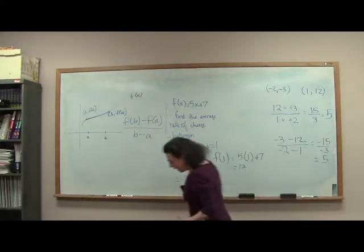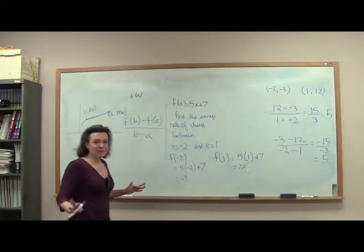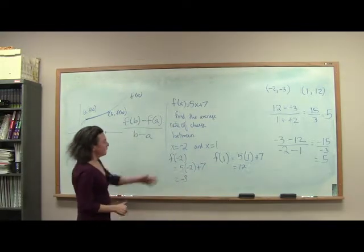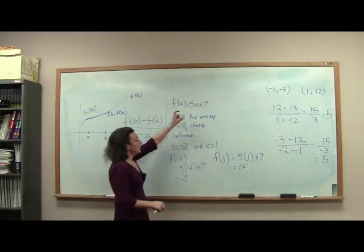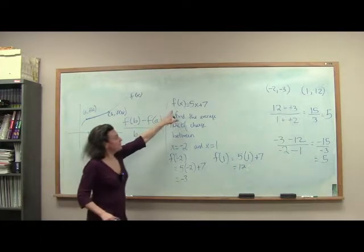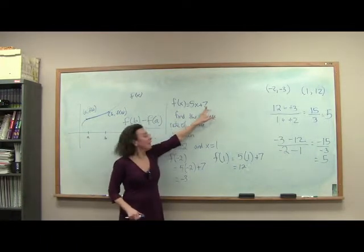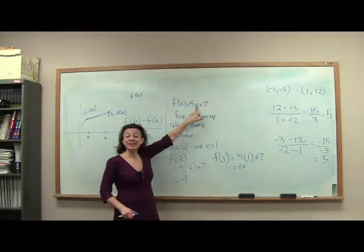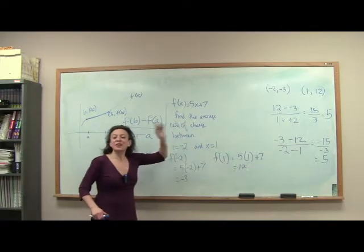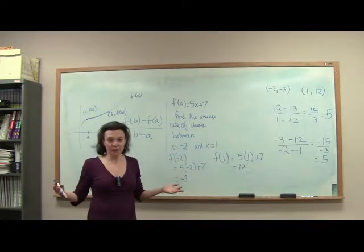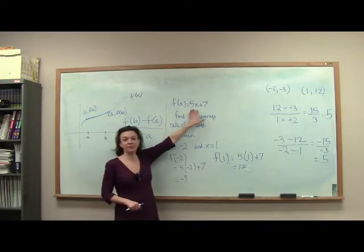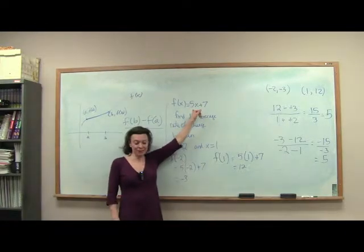Those of you who remember your algebra — remember how we computed slope before in class? This is the graph of a line, and remember the number in front of X is precisely our slope or our average rate of change. The cool thing about lines is that they have a constant rate of change, and you can always look at exactly what it is.